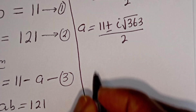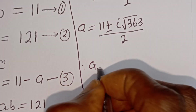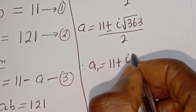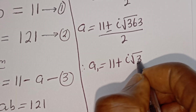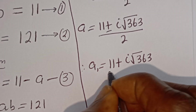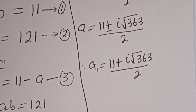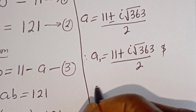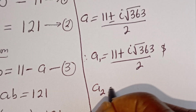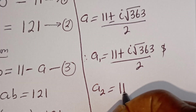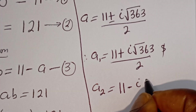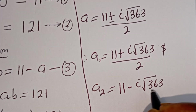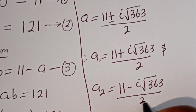Therefore, A1 is equal to 11 plus i square root of 360, divided by 2. And A2 is equal to 11 minus i square root of 360, divided by 2.